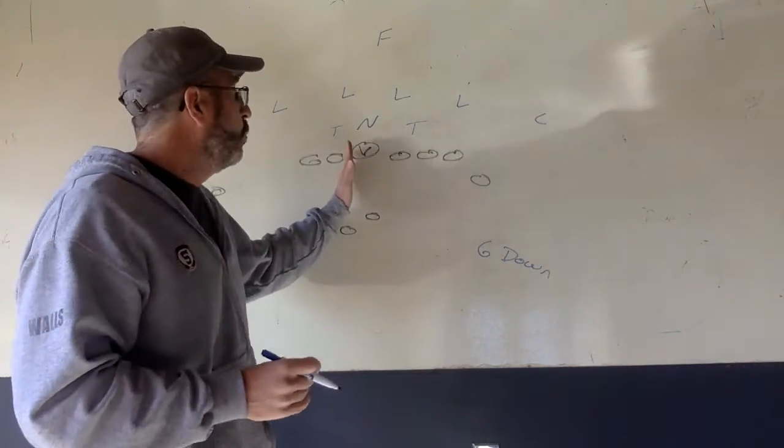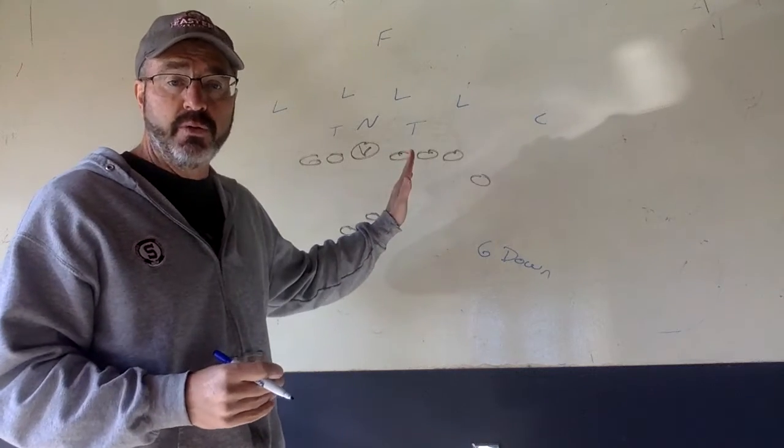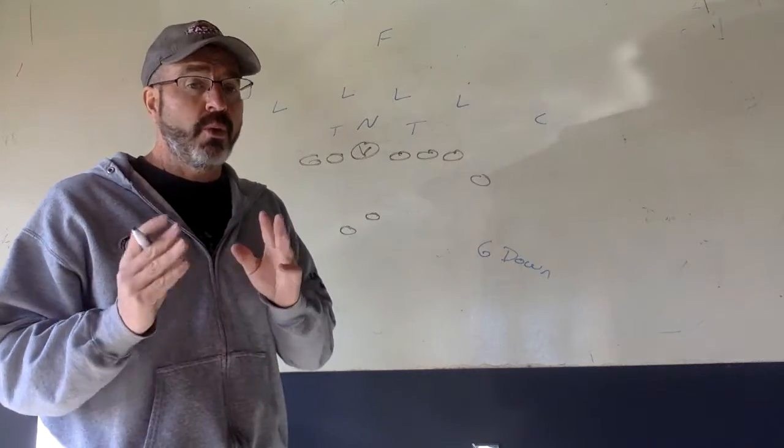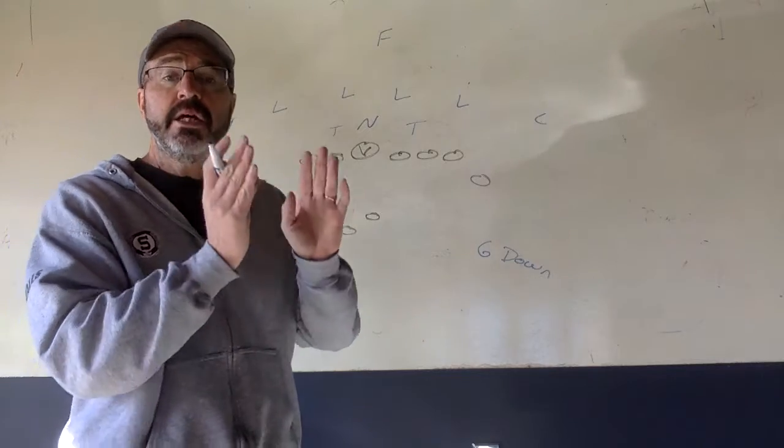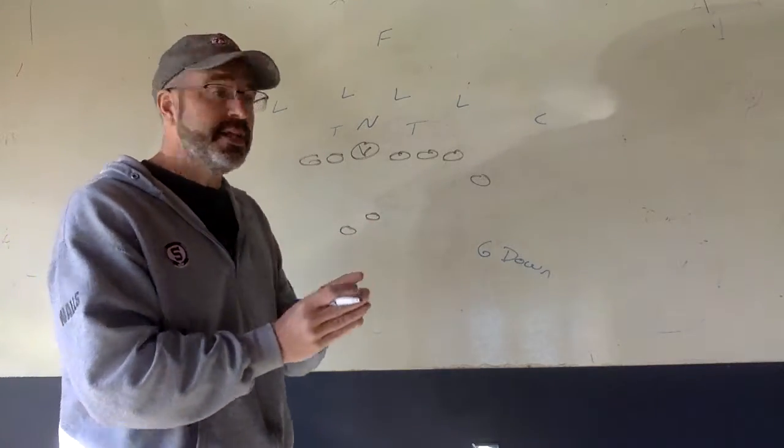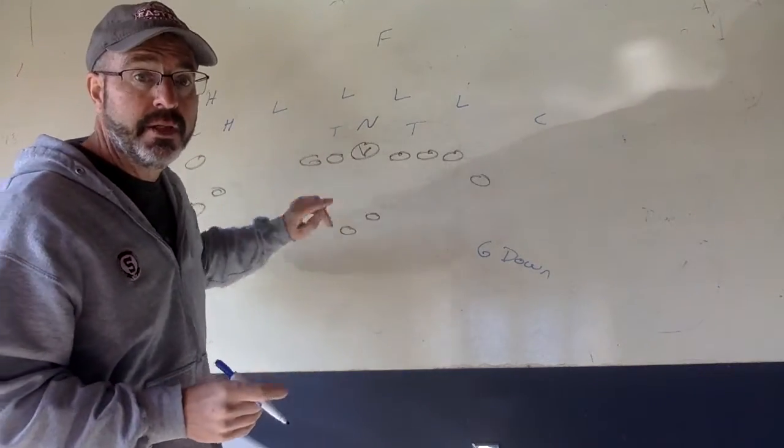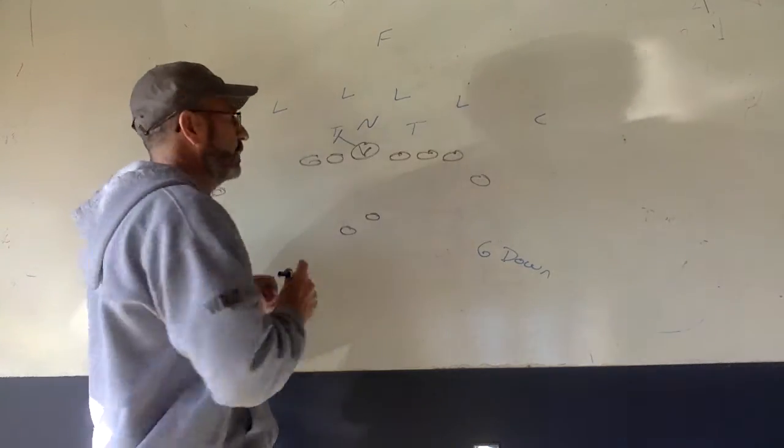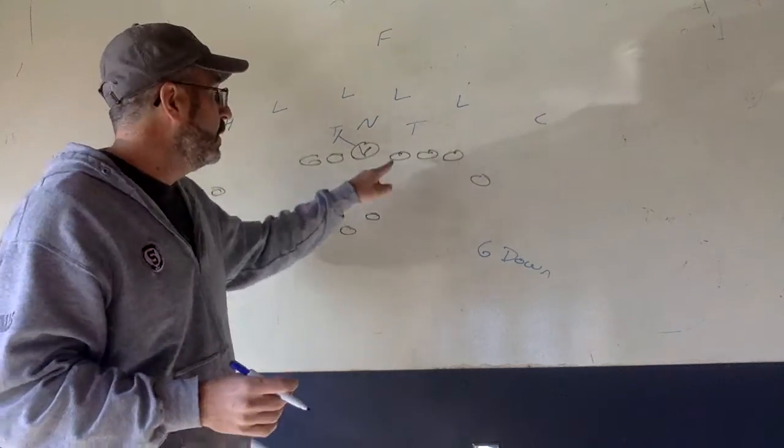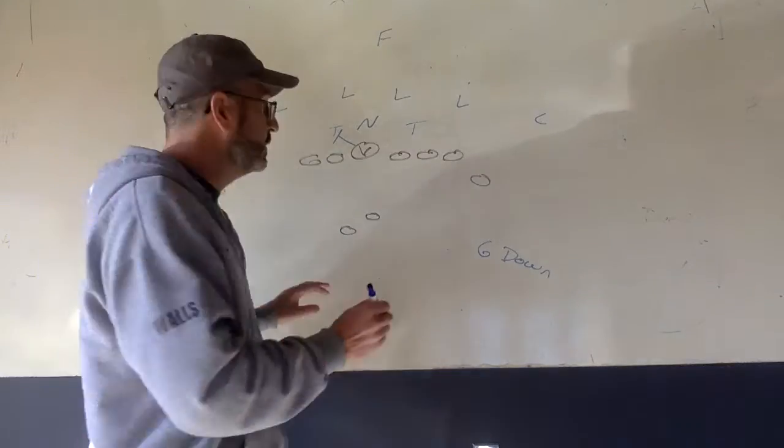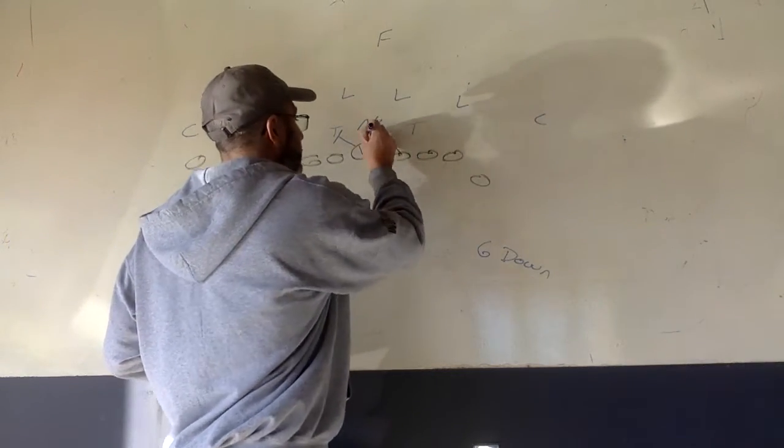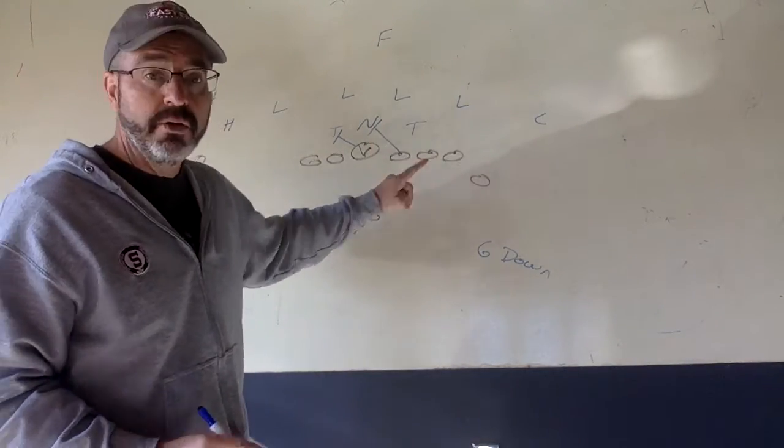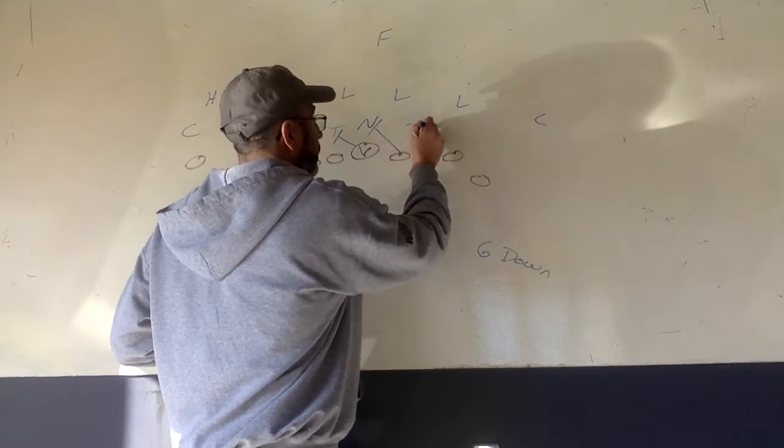For down, we're going to keep our same line up as we normally would, and we're going to be blocking everybody to their next man down. For example, the center will block back. You take care of this guy. The guard, which will be Alex, you block back on the nose. The tackle, you block back here.